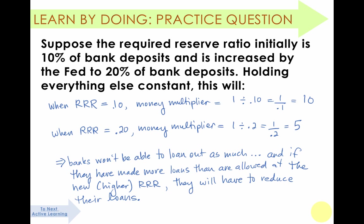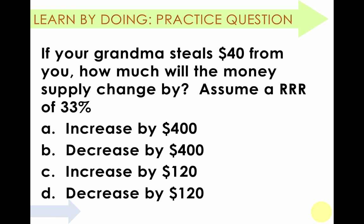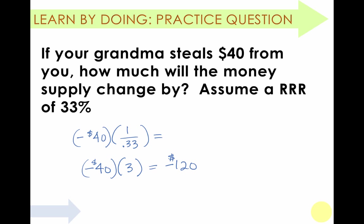Here's the worked problem. And here's the last question — another thought experiment. You have an evil grandma who steals $40 from you. How much does the money supply change by, assuming a required reserve ratio of 33%? Does it: A) increase by 400, B) decrease by 400, C) increase by 120, or D) decrease by 120? The answer is decrease by 120.